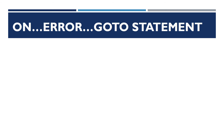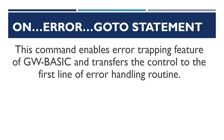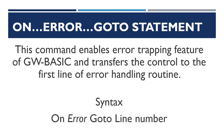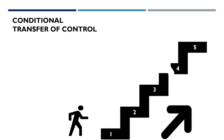What will happen if an error occurs in our program? We use the ON ERROR GOTO statement. This command enables the error trapping feature of GW BASIC and transfers the control to the first line of the error handling routine. The error handling routine is also a set of lines which will handle and remove the error. The syntax is: ON ERROR GOTO line number.